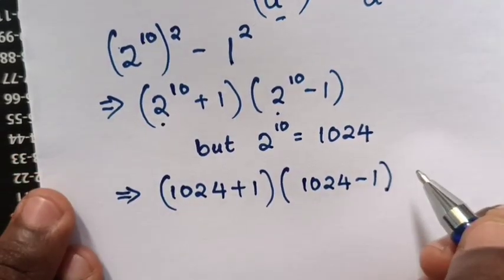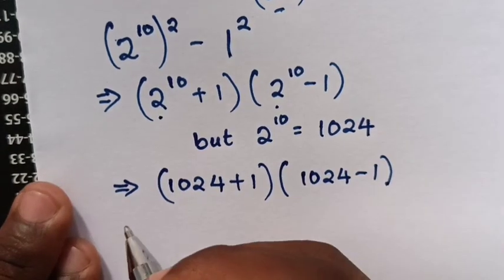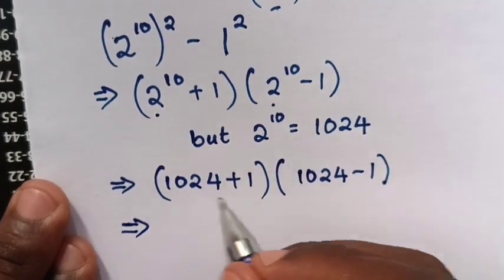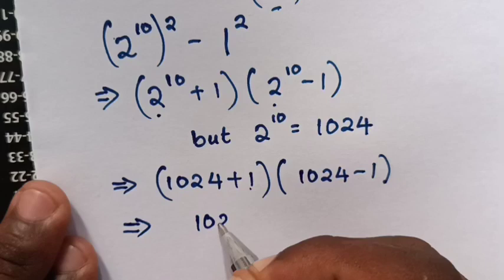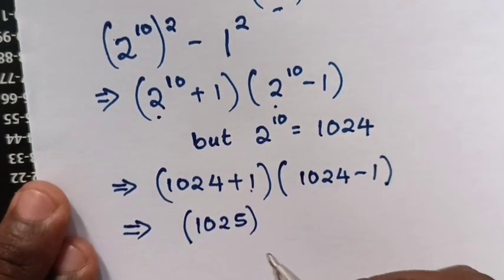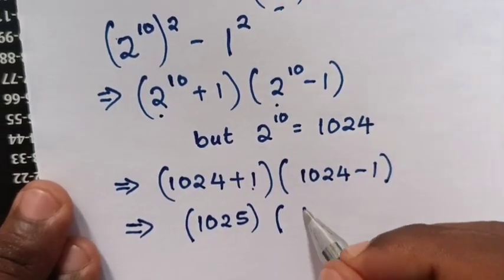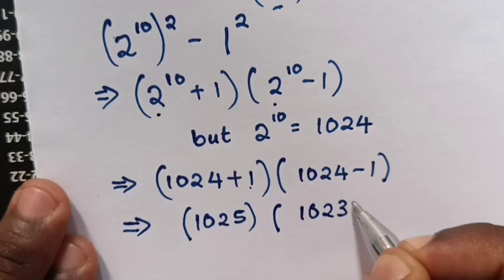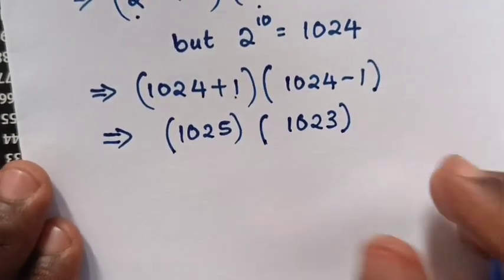So 1024 + 1 is 1025, times 1024 - 1 is 1023.